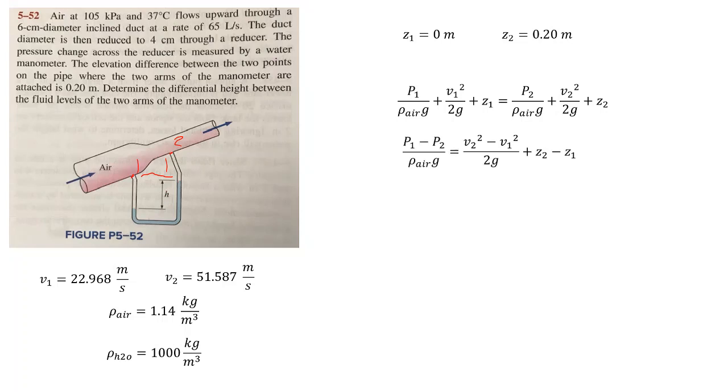If we rearrange our terms here, we get P1 minus P2 over rho g on the left equals v2 squared minus v1 squared over 2g plus z2 minus z1 on the right. We're going to multiply through by that rho g and then we're going to plug in our values to solve for P1 minus P2.